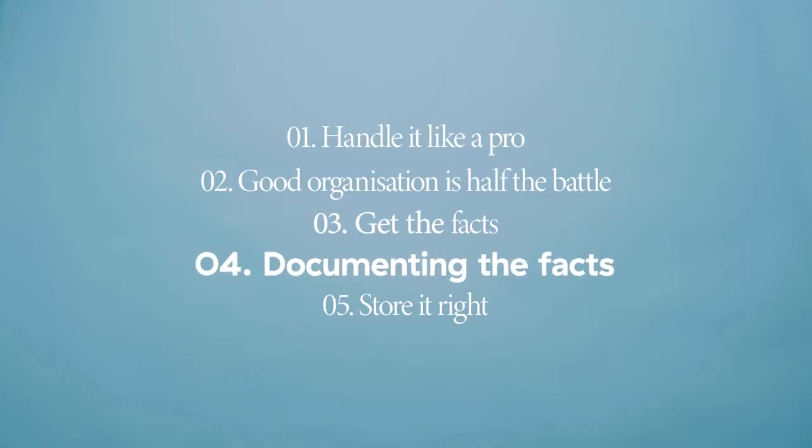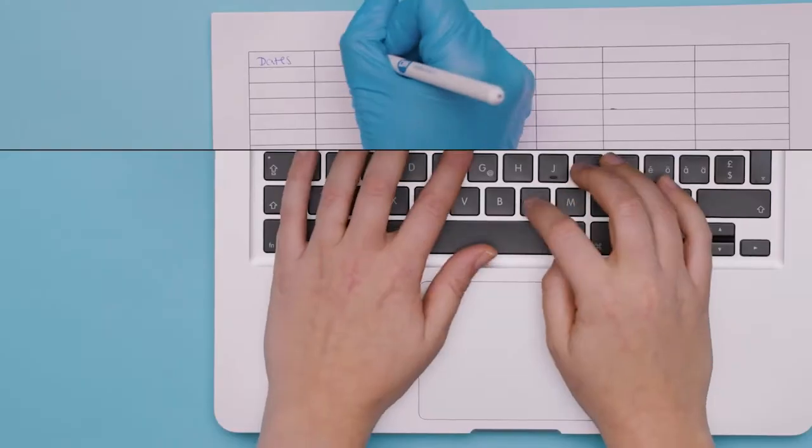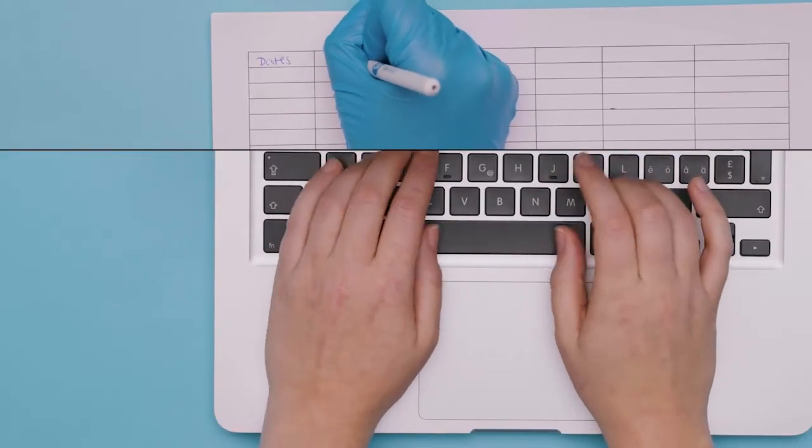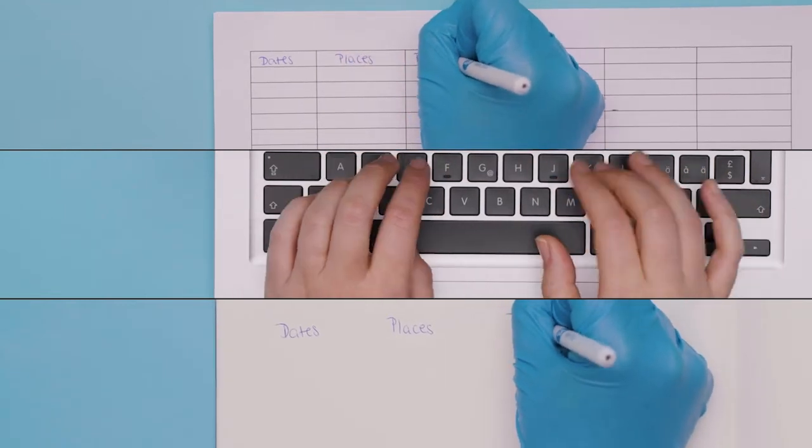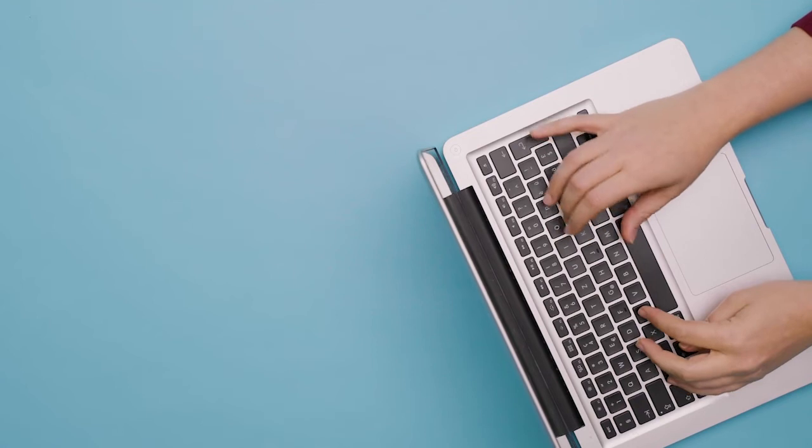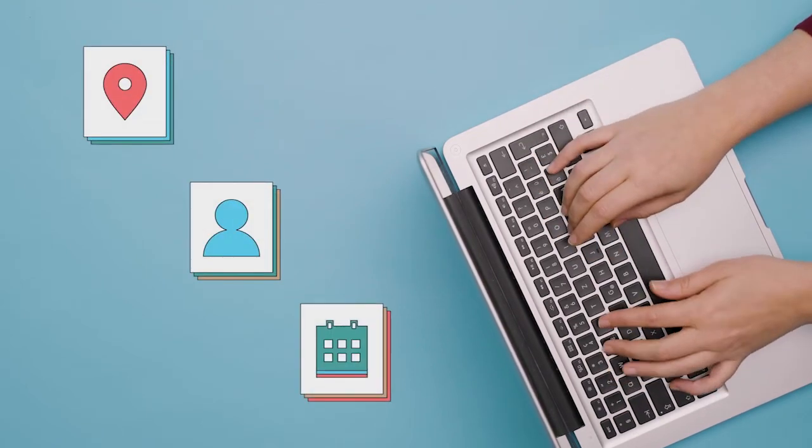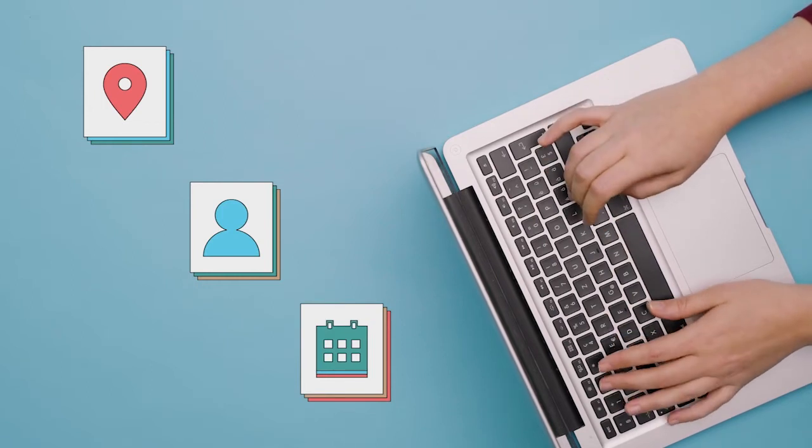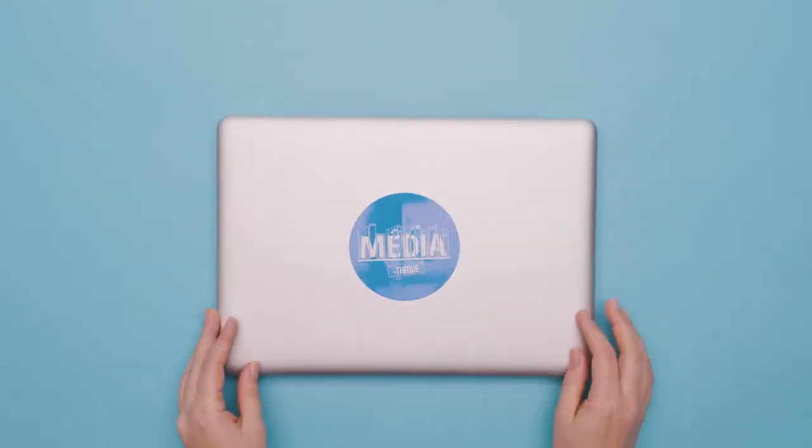Four. Documenting facts. Make sure to write down all the information you have. You can use any type of spreadsheet as long as you document the information the same way each time. All the information you gathered, from places to faces and dates, write them down and establish an inventory. Trust us. Professional archivists and anyone looking at your documents will thank you for it.